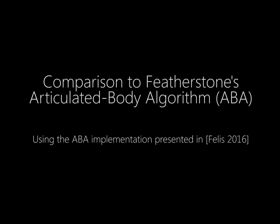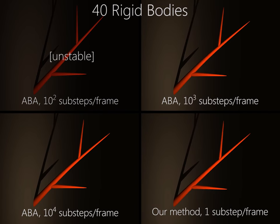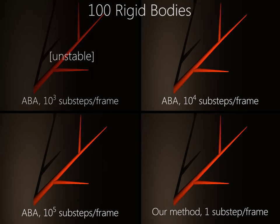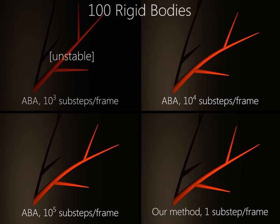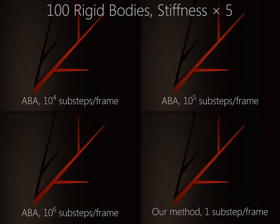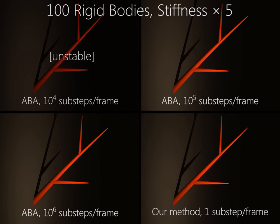We compare our method to the Featherstone articulated body algorithm using an explicit time integrator. While our method is able to take frame rate time steps, the time step restriction on the explicit method becomes more stringent as we increase the number of rigid bodies, or as we increase the stiffness of the branch.